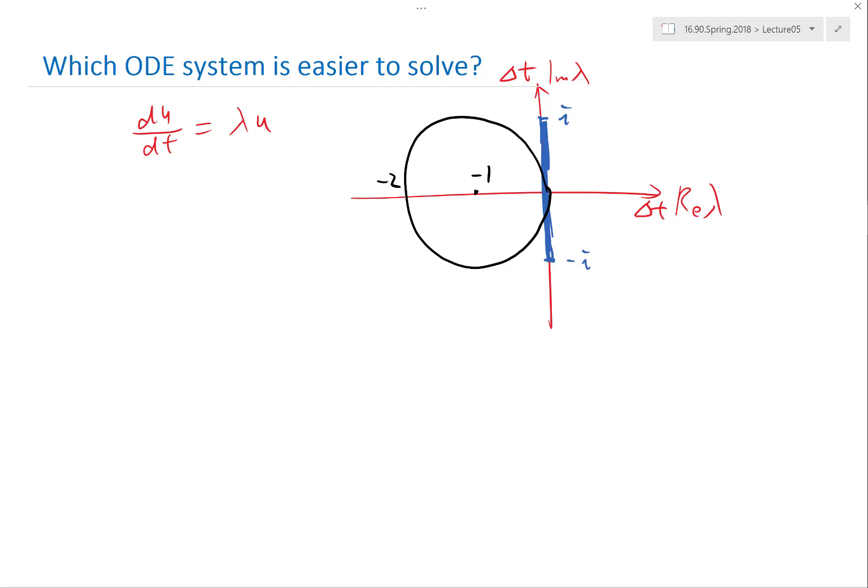If you have a system of ODEs, and if you do eigenvalue analysis you have one of the lambdas on the left of the imaginary axis and another lambda exactly on the imaginary axis, what solver would you use?